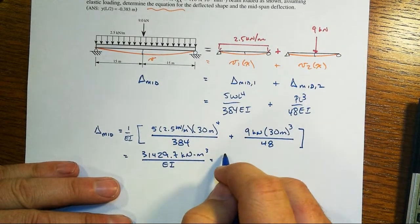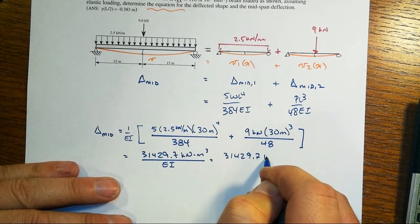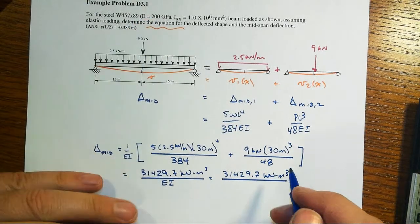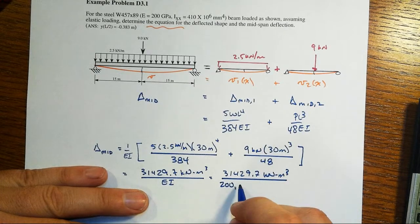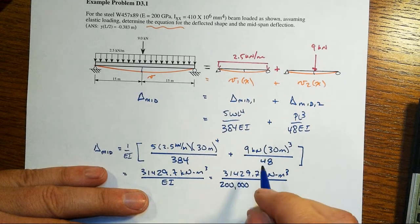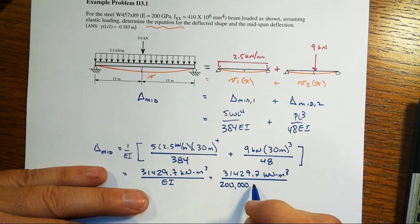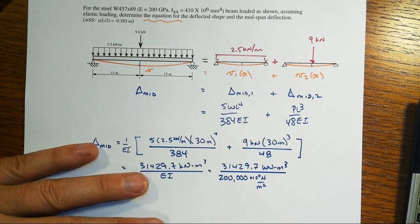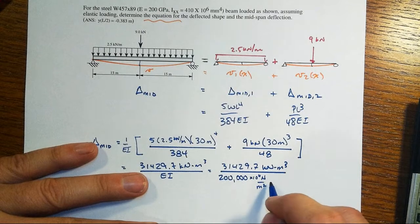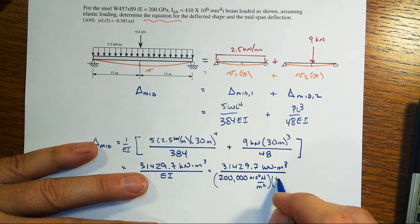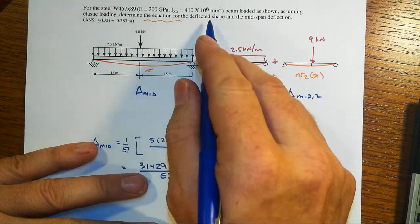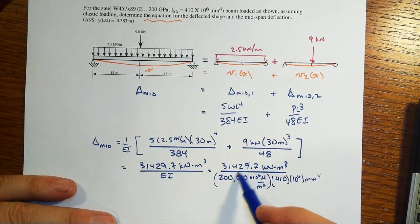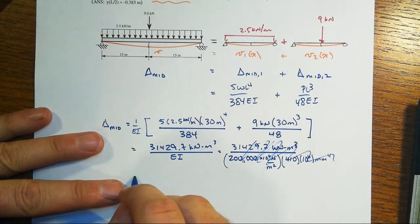31429.7 kilonewton meter cubed over the E value, which is 200 gigapascals. Well, 200 gigapascals is 200,000 megapascals, which is megapascals are times 10 to the sixth newtons per square meter. That's not a very convenient... Times 410 times 10 to the sixth millimeters to the fourth. Oh, good grief. This is just ugly, isn't it? I don't like this. Heck with that. Let's not do it that way. Why didn't you plan this out? Well, I could have. I know what the answer is. It's .383 meters.